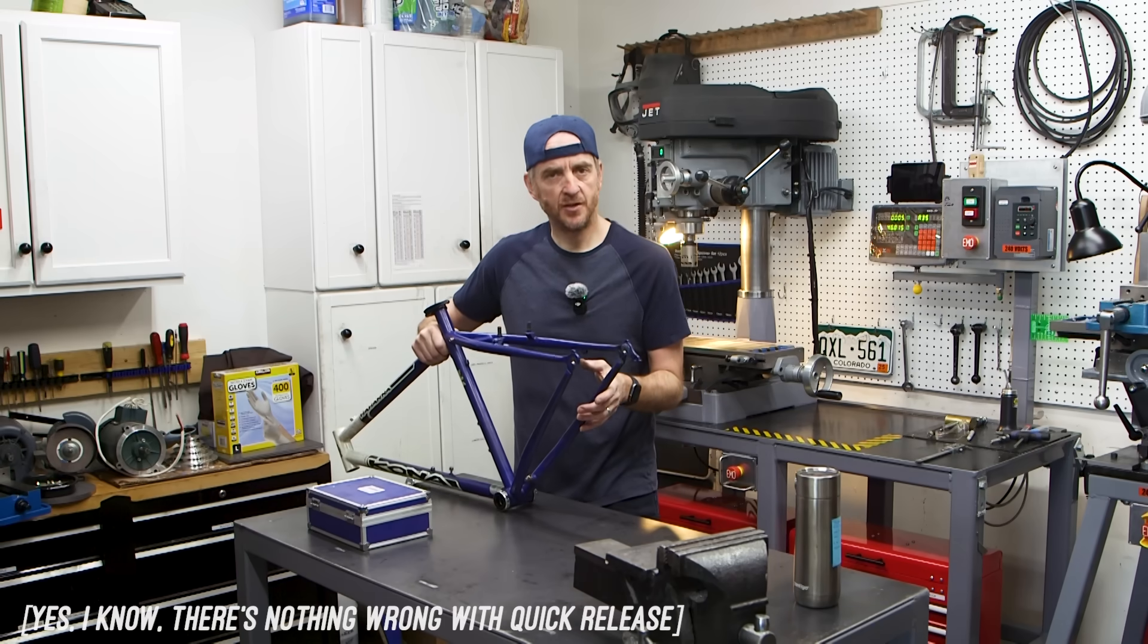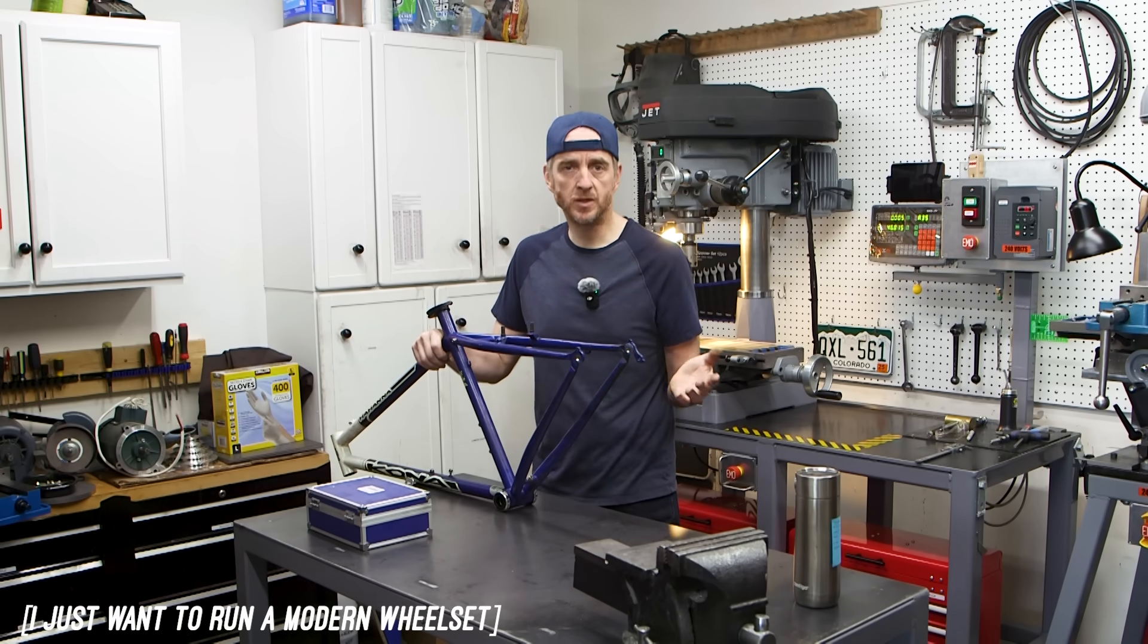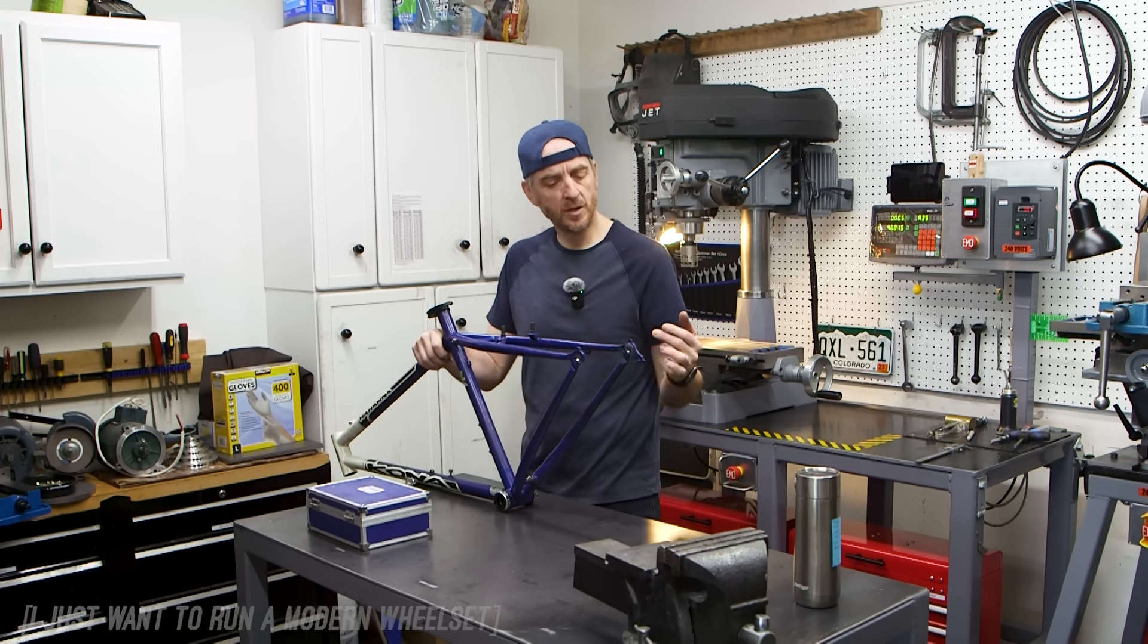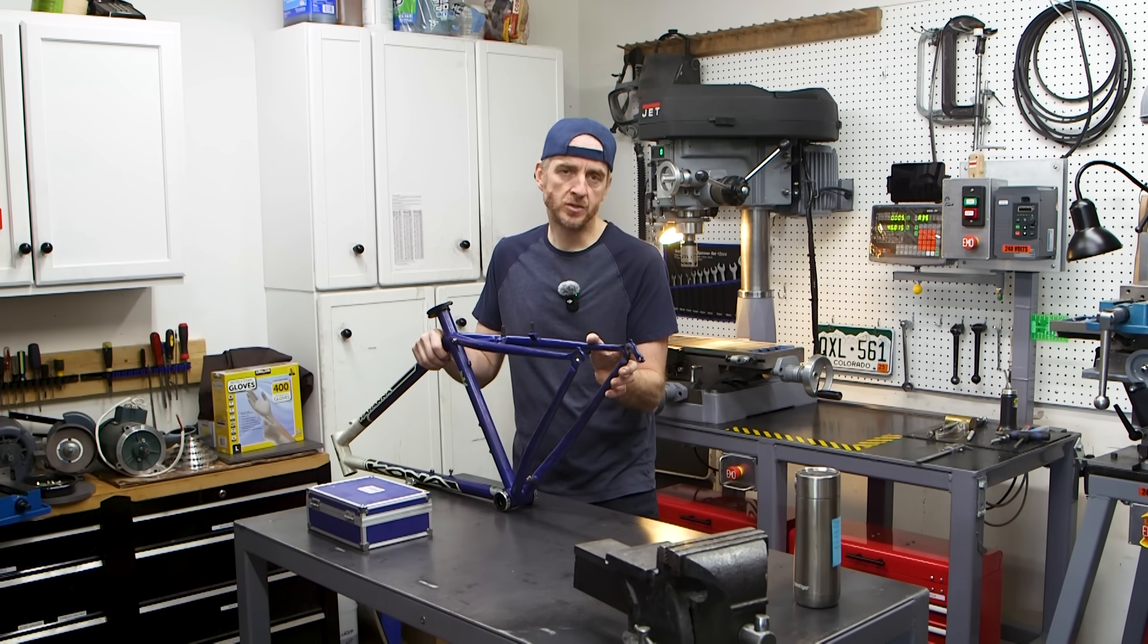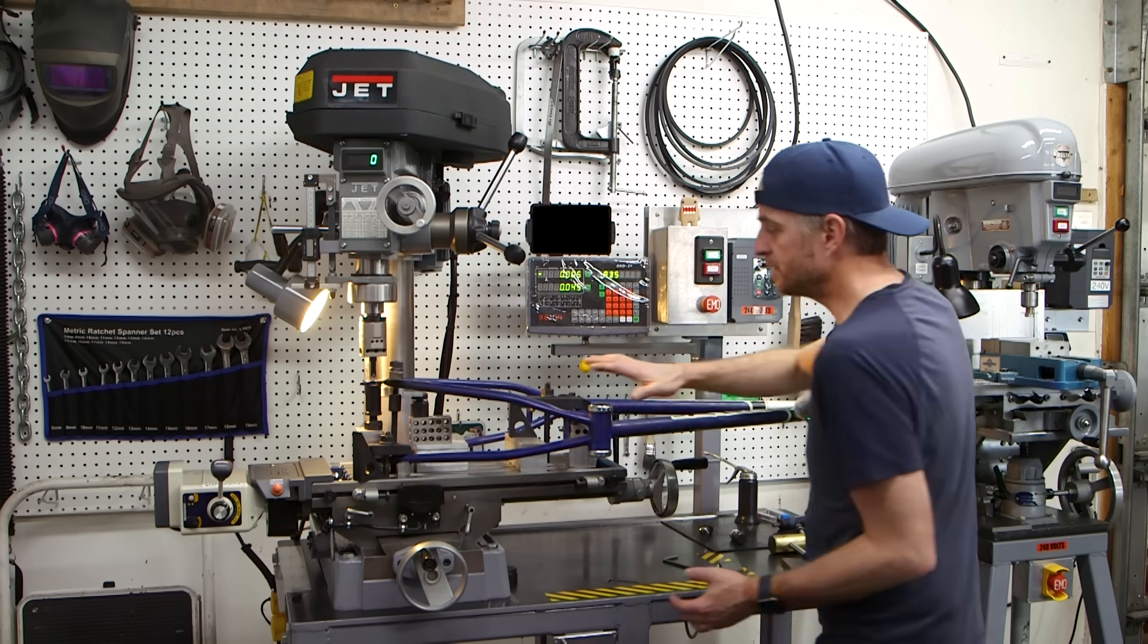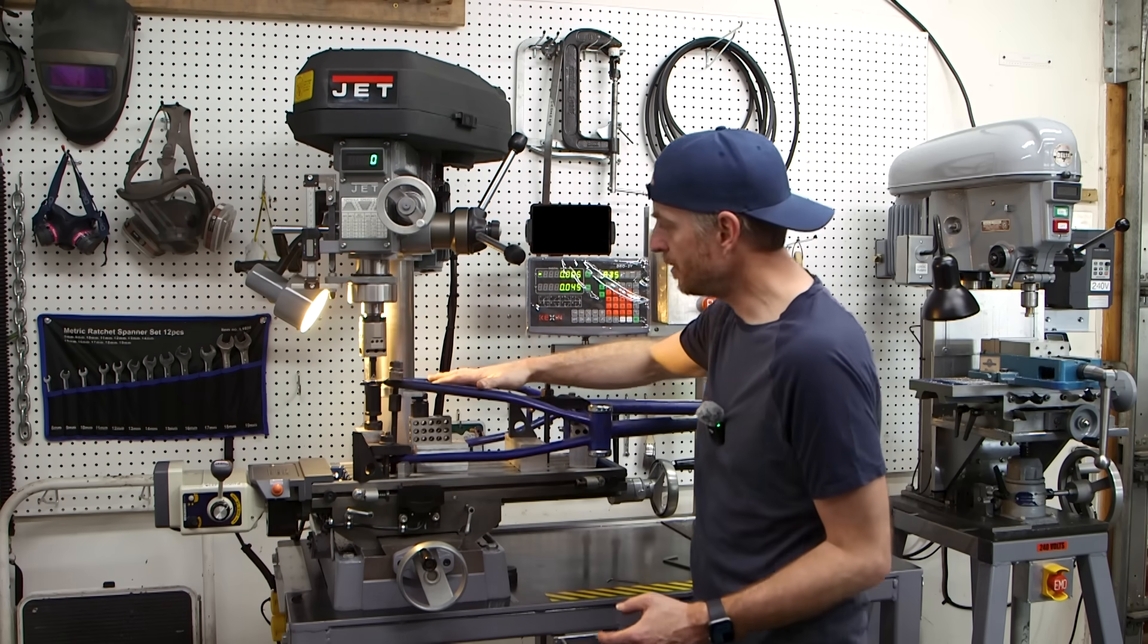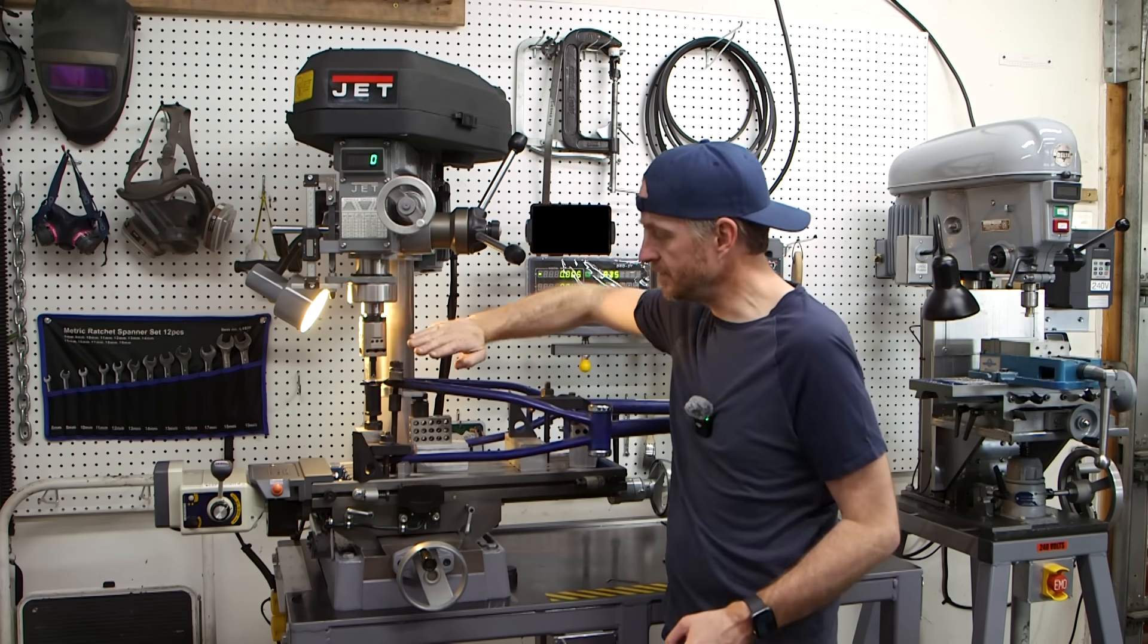This frame was initially designed to use quick release axles, so the diameter inside the dropouts is only 10 millimeters. I want to run 12 millimeter through-axles on this frame, so I need to open those up to 12 millimeters so the axle will fit. I've got the frame mounted to my vise. I've got it clamped down and I've leveled the rear dropout so that it's parallel to the table in both directions.